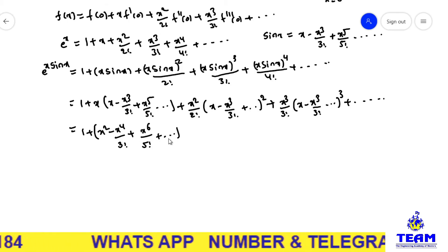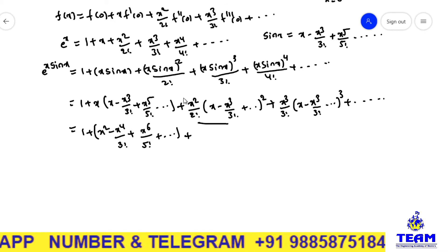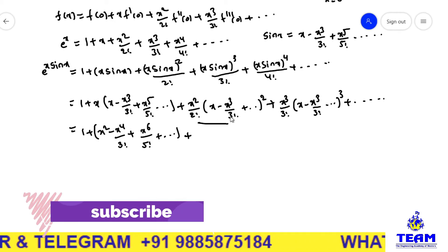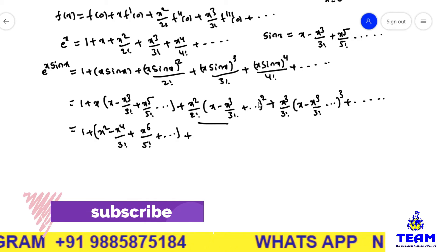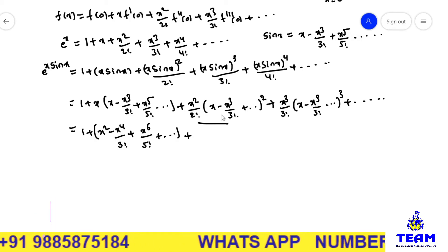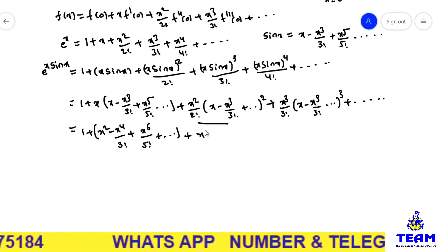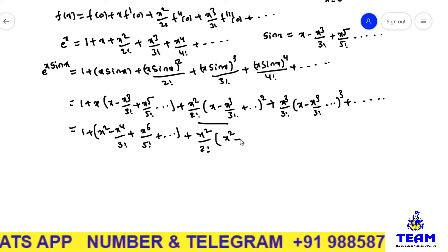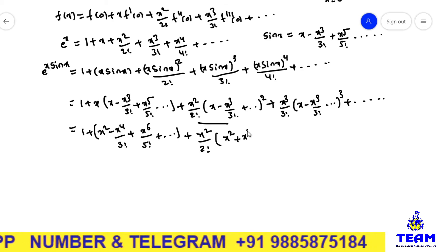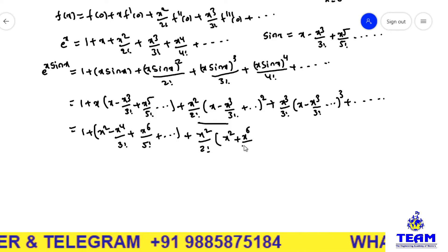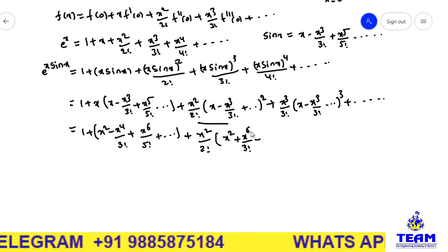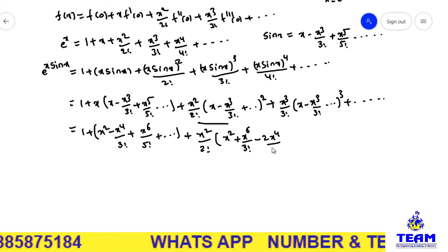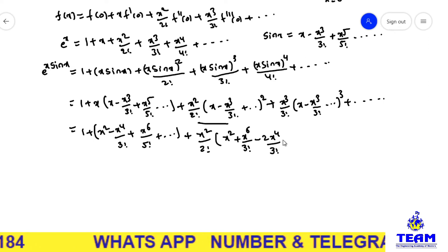For the x²/2! term outside, we expand (x − x³/3! + …)². Using a−b whole square: a² + b² − 2ab, that is x² + x⁶/3!² − 2·x·x³/3! which gives x² + x⁶/(3!)² − 2x⁴/3! and so on. I am not writing the highest power terms.